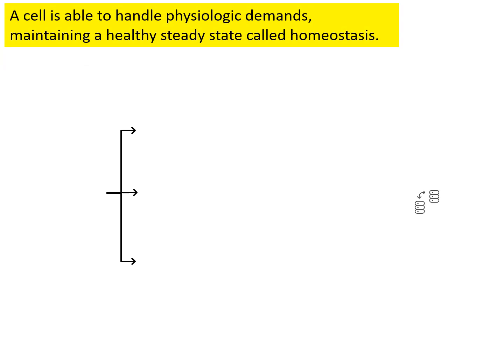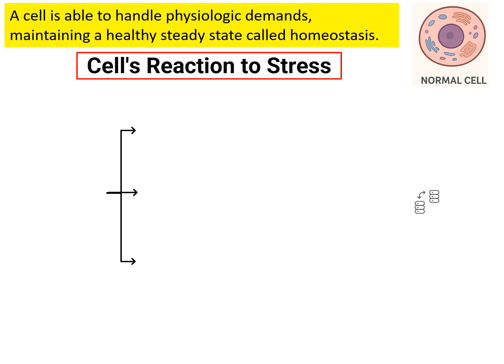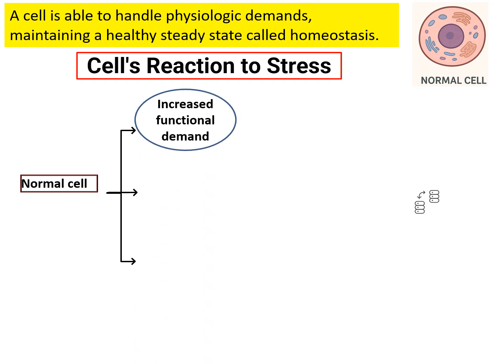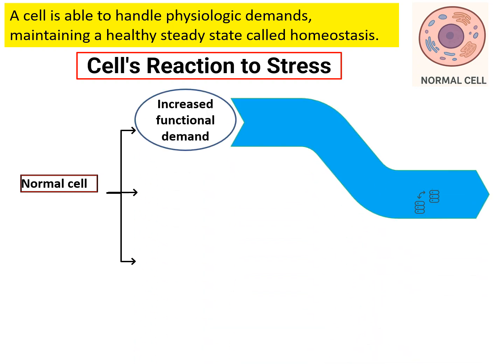What is homeostasis? A cell is able to handle physiological demands maintaining a healthy steady state called homeostasis. This is a normal cell. When there is increased demand or stress, how is a cell going to react to that stress?